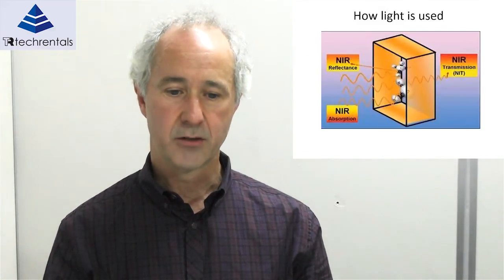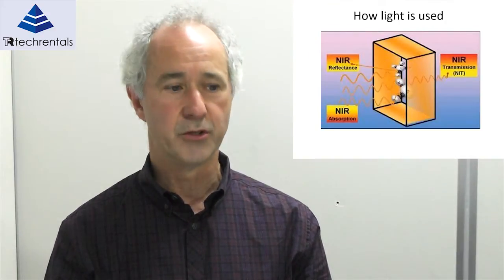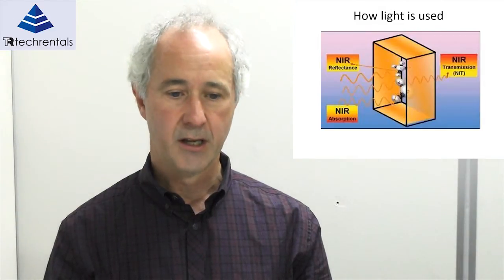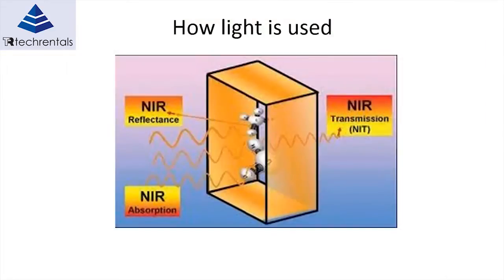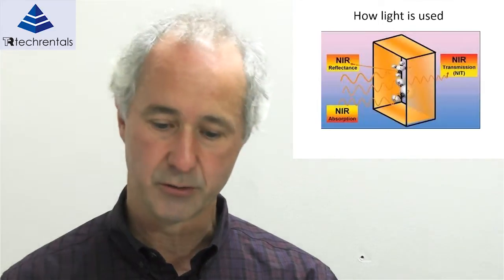How is light used in NIR spectroscopy? You illuminate your material with a source light, and as shown in this diagram, there are three ways that light interacts with the object: it can be reflected from the material, absorbed by the material, or fully transmitted through the material. We can use reflectance or transmission to measure the properties of the material.